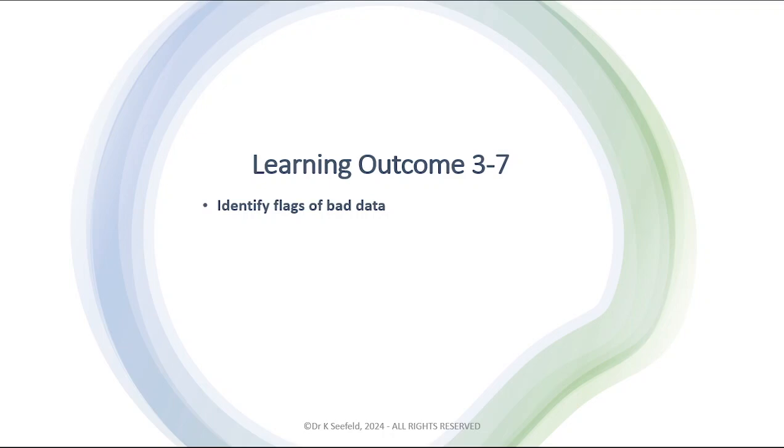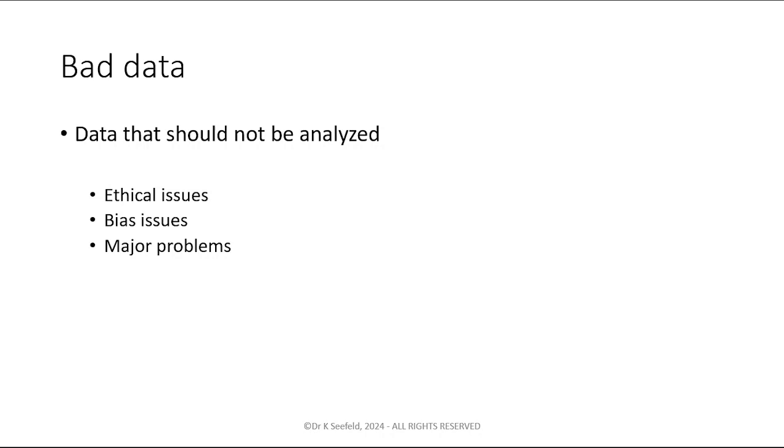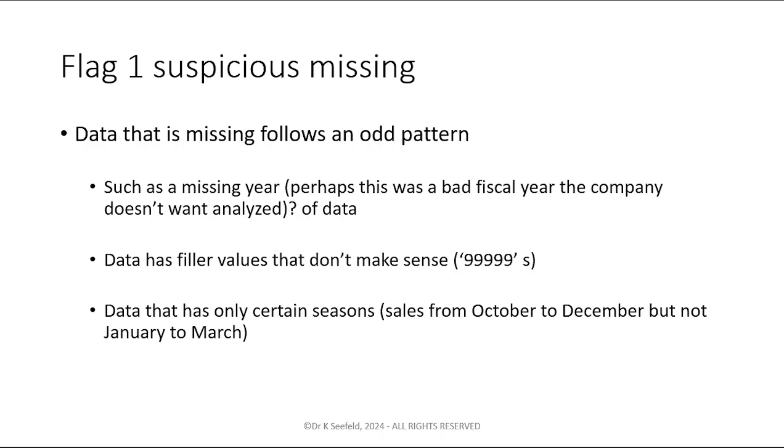We are going to continue and talk about a few other things. There are no exercises on these, but I wanted to talk in general about what I call flags of bad data. Data that should not be analyzed is data that has ethical issues or bias issues or other major problems. Like, if your data is garbage, it's not worth analyzing. Ethical issues: obviously stolen data. But bias issues as well. If you have data that is just supposed to be a representative sample and it's just like everybody in there is 85 years old, that's not a representative sample of age. You have to think about what data you have and if it has serious flaws. If it does, don't bother analyzing it.